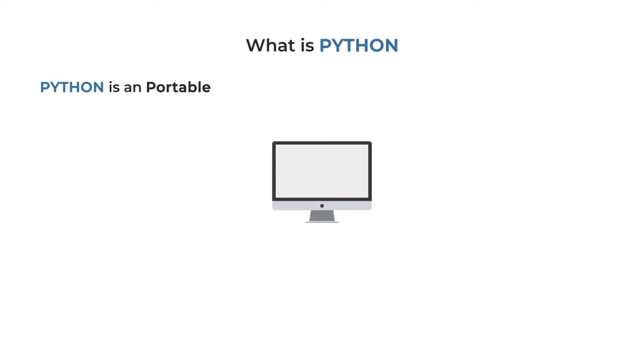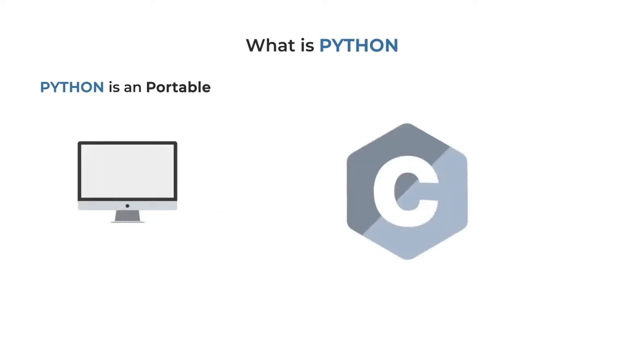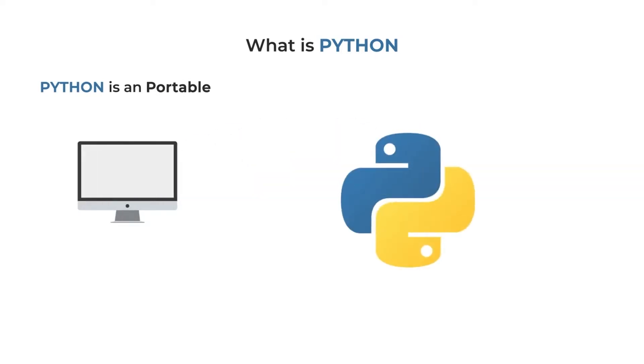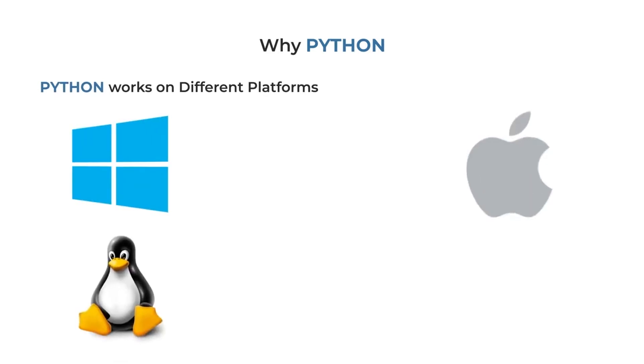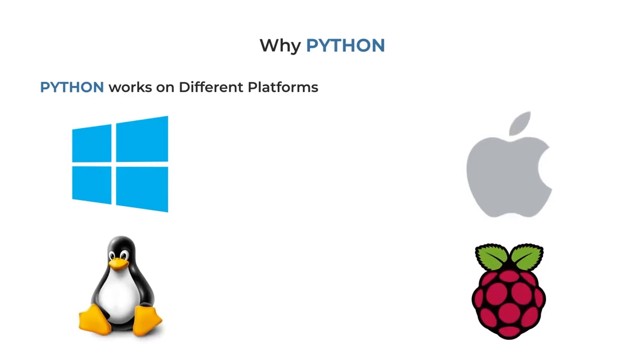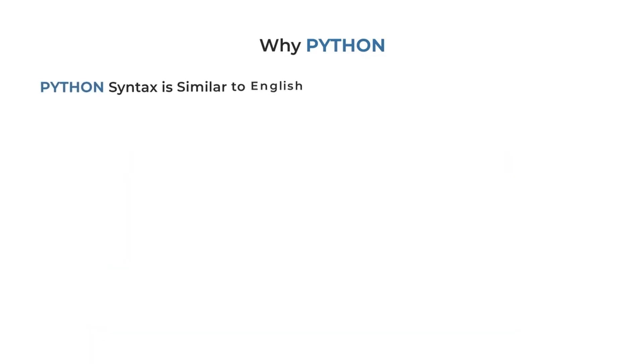Python is also portable because it is interpreted every time. Unlike compiled languages, Python is portable across machines — you write code once and can use it anywhere. Python works on different platforms: Windows, Mac, Linux, and Raspberry Pi. So even if you are from the electronics department, you can use it.